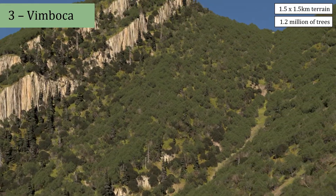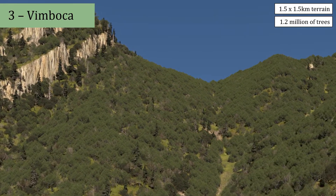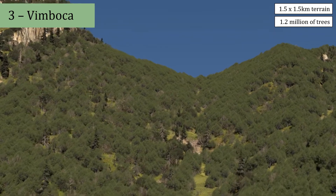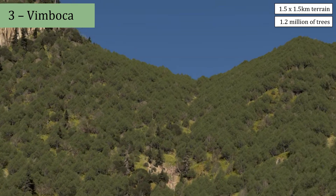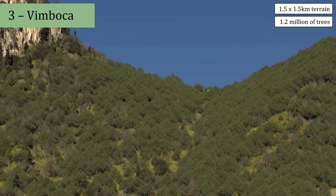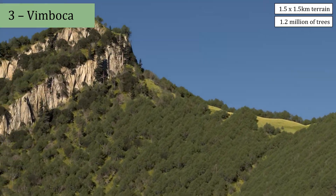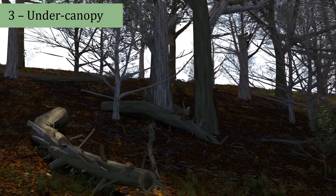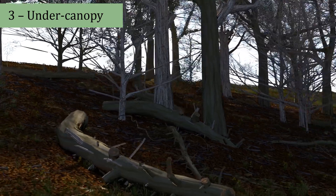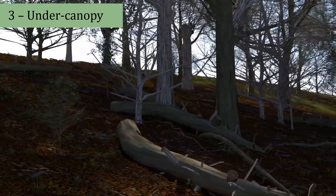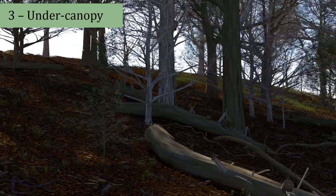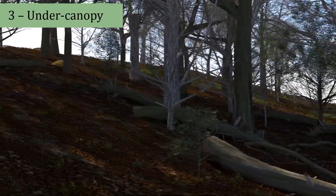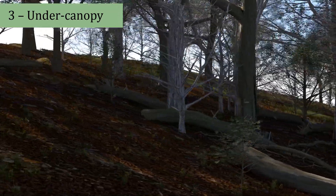We also apply our simulation to another scene with a smaller terrain producing on the order of a million trees. An understory scene showing the result of our model instantiation of decay, snags, and logs with ground detail including grass, leaves, and small branches.